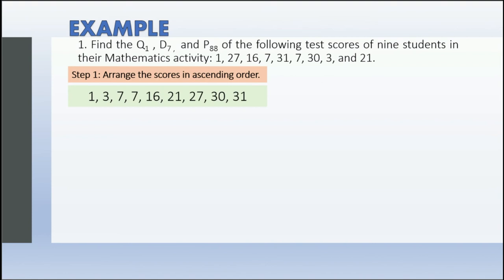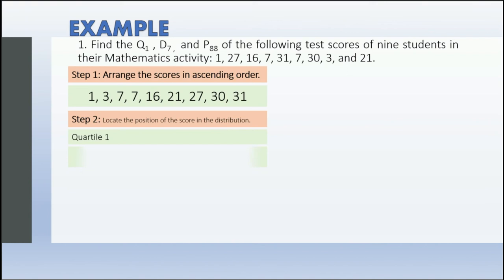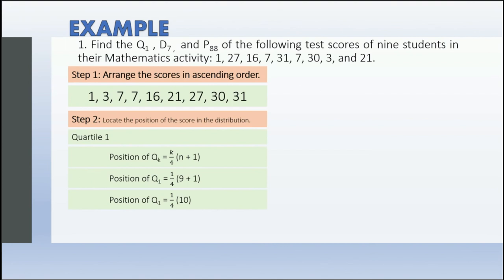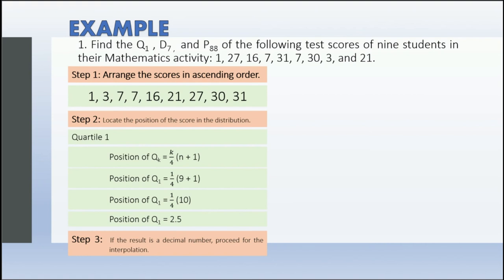Arranged in ascending order: 1, 3, 7, 7, 16, 21, 27, 30, and 31. Step 2: locate the position of the score. Using the formula Q sub k = k/4 × (n+1), with k=1 and n=9, we get 1/4 × 10 = 2.5. Since the result is a decimal number, interpolation is needed.